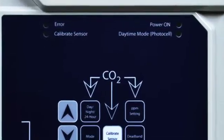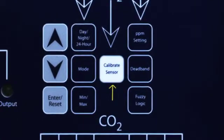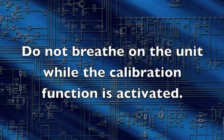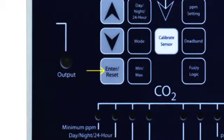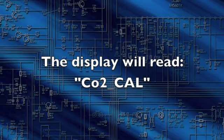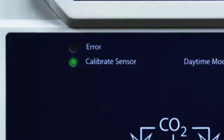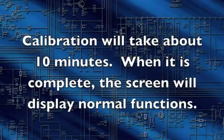Press the Calibrate Sensor button to activate automatic calibration. Do not breathe on the unit while the calibration function is activated. Press Enter Reset to start the calibration sequence. CO2 Cal will be displayed and the Calibrate Sensor LED will blink. Calibration will take about 10 minutes. When it is complete, the screen will display normal functions. Calibration will not affect any of the other settings.